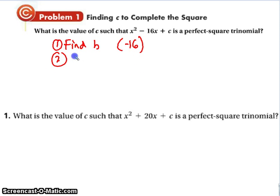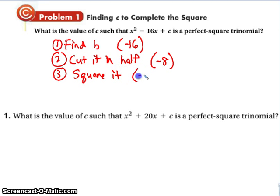Step number two, cut it in half, which gives us negative 8. Step number three is square it, which gives us 64. So that is the number that goes in C.